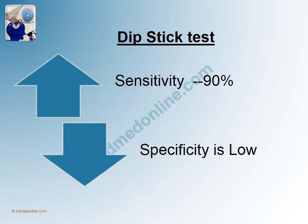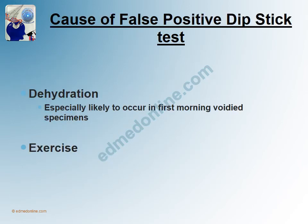The sensitivity of the dipstick test for picking up hematuria is about 90 percent. High amounts of vitamin C may cause a false negative result. However, the specificity of the dipstick test is low, meaning there are a number of situations where a false positive result can occur — especially with dehydration, which is likely in the first morning voided specimen, or following strenuous heavy exercise.